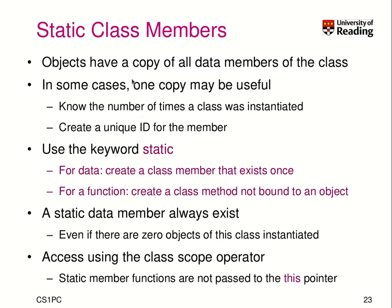We know so far that objects with their member variables have a copy of all the data members of the class, each with their own individual values. Sometimes it might be useful to have one copy per blueprint or per class — for example, to know the number of times a class was instantiated, like for creating a unique ID. Therefore, you can create a variable in a class using the keyword static, which we know from C already. For data, that means you create a class member that exists only once. For a function, it means you create a class method that is not bound to an object.